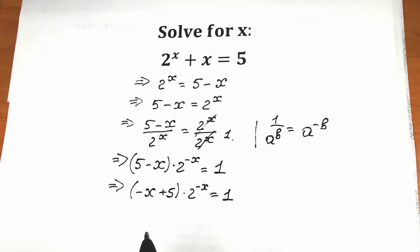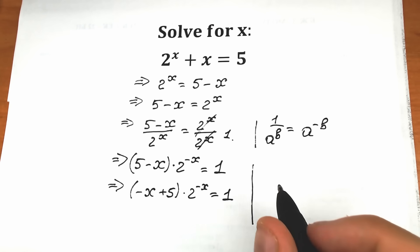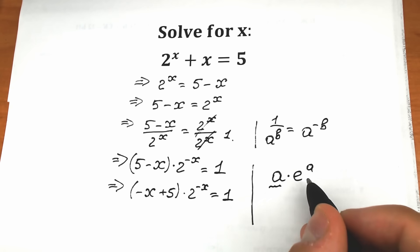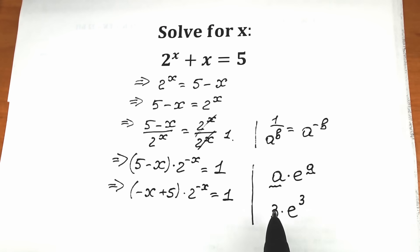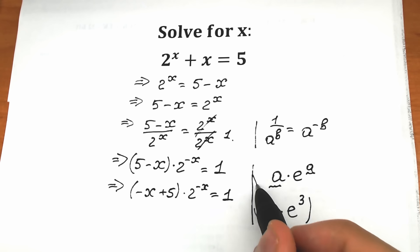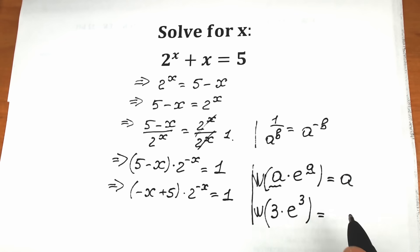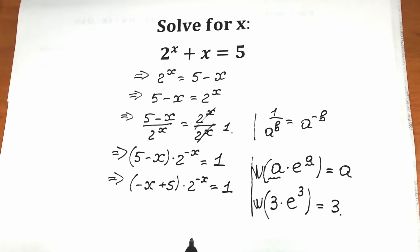Now I want to apply the Lambert W function. Let me explain it in simple words. Imagine we have an expression like a times e to the power a — a can be any expression: 3, sine, cosine, square root, something complicated. When we have this form a times e to the power a and apply the Lambert W function, the result is simply a. For example, W(3·e^3) = 3, and W(5·e^5) = 5.